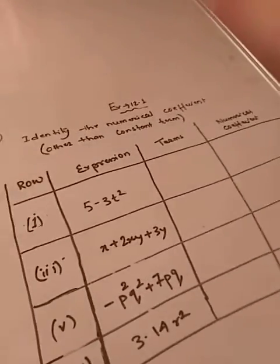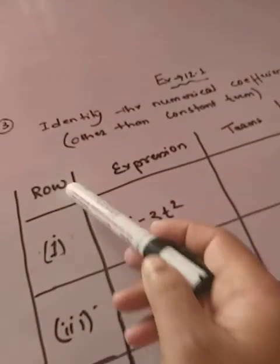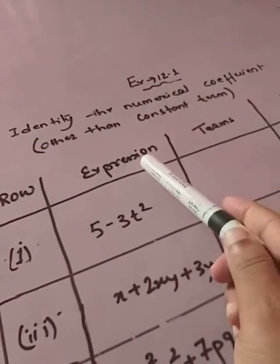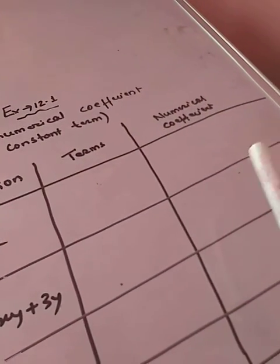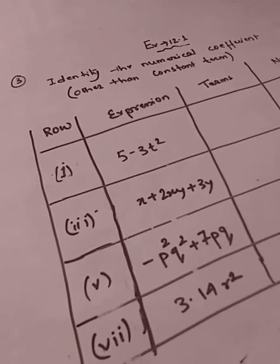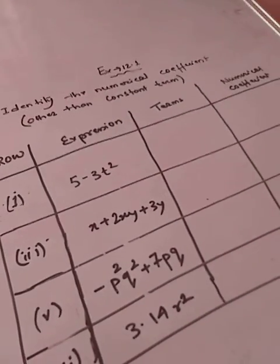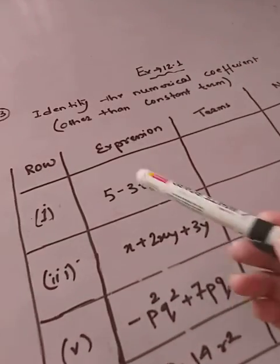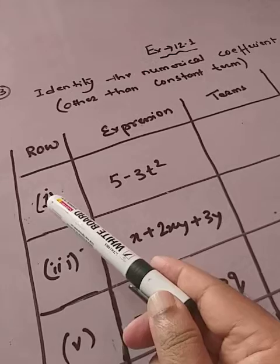First thing that you have to do, you can see that I have drawn one particular box with four columns. In the first column you have to write row, in the second column you have to write expression, third you have to write terms and then finally you have to write numerical coefficient. There are altogether I guess 10 sums under sum number 3. So I'm just showing 4. I guess 4 is enough. You will all understand how exactly it should be done.